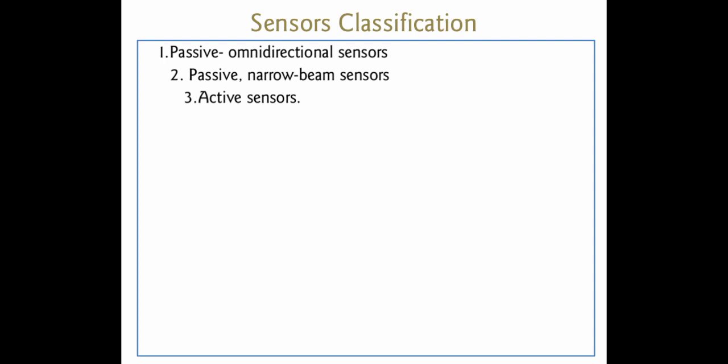Now, coming to the classifications of sensors — there are three types. The first is passive omnidirectional sensors. These sensors do not have a specific direction and do not manipulate the data. For example, a temperature sensor measures the temperature surrounding the sensing device — whatever the temperature is within the vicinity of that sensing device, it is measured without manipulation, and that same information is sent to the main location.